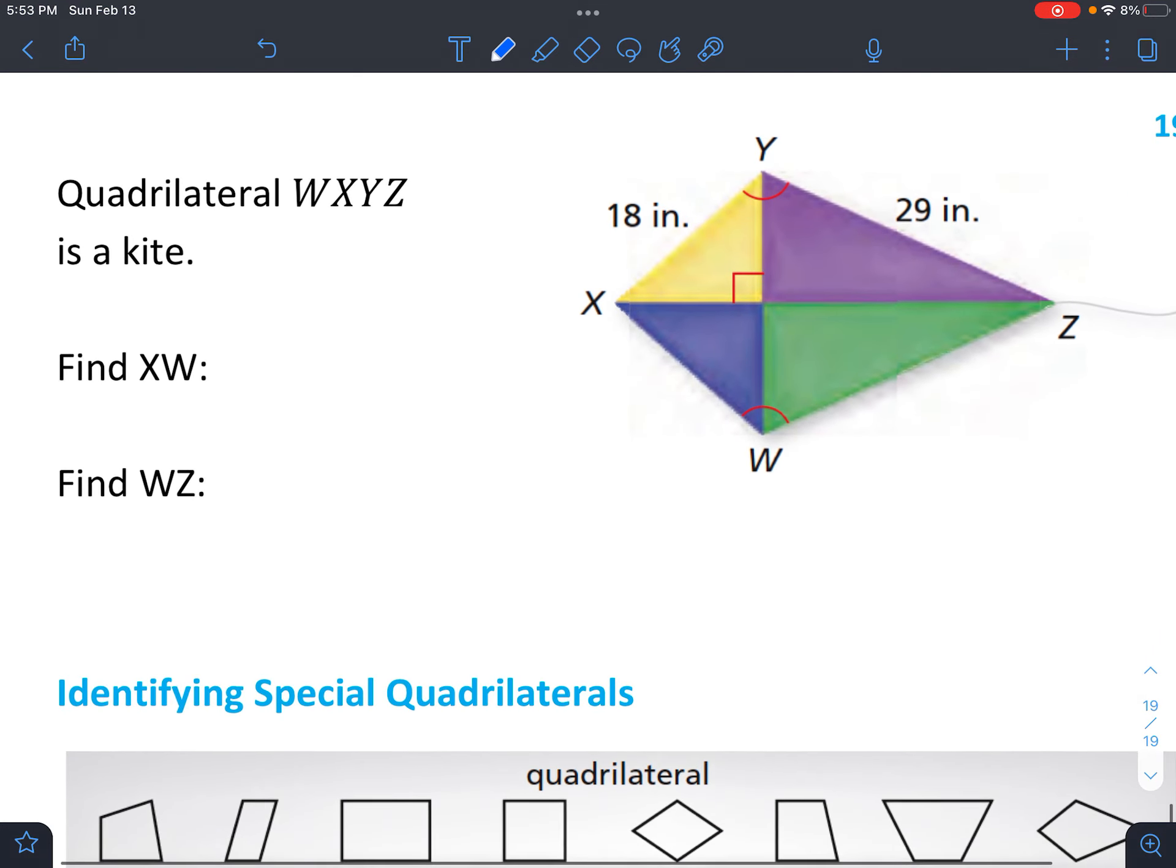Let's look at this next one. It says quadrilateral WXYZ is a kite. Find XW. So we're given the side as 18. And this side has to be the same, right? This one's super quick. XW has to be 18 inches.